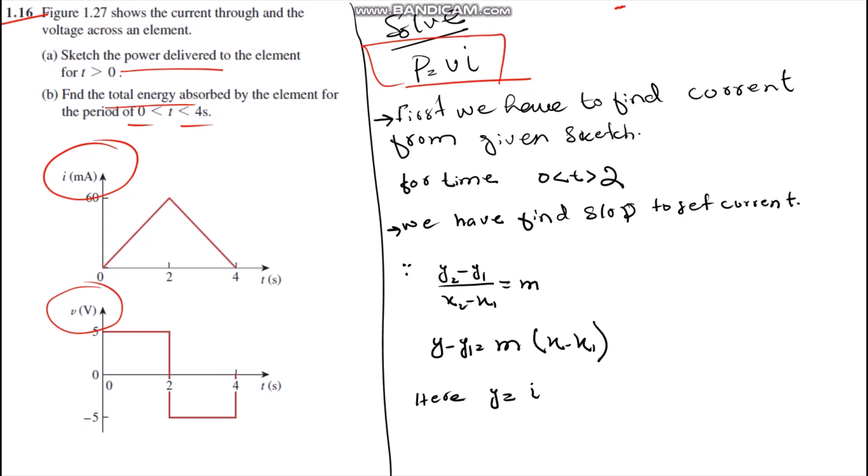The current is increasing with the passage of time and then decreasing. It is not constant, so we have to find the slope. With the help of the slope equation, we will get the value of current i from 0 to 2 seconds and then 2 to 4 seconds.